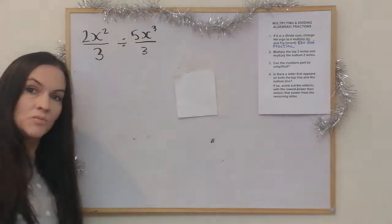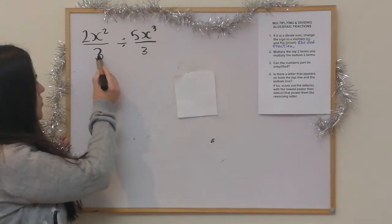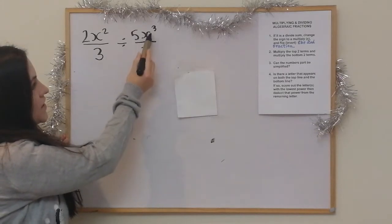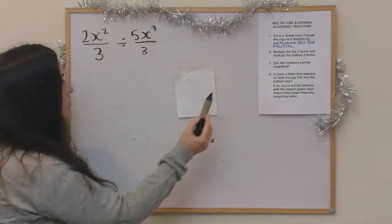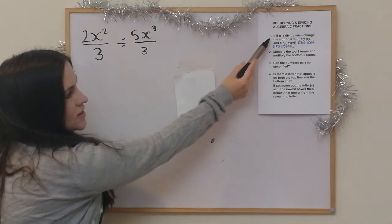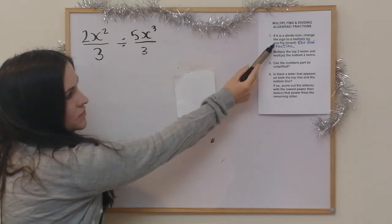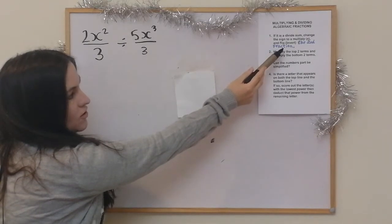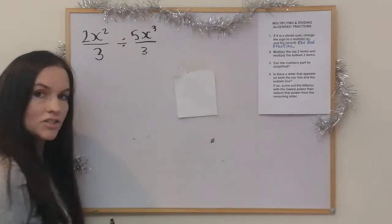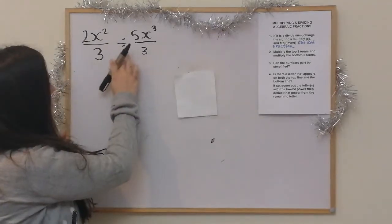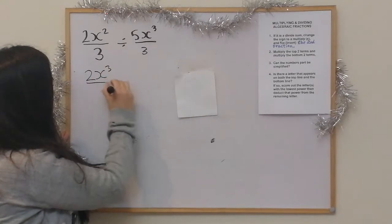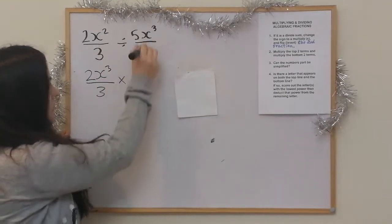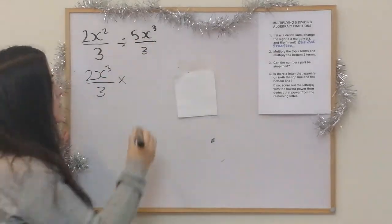So the first example we've got is 2x squared over 3 divided by 5x cubed over 3. The first step says: if it's a divide sum, change the sign to a multiply and invert, or flip, the second fraction. So because it is a divide, I change it to a times and flip the second fraction.